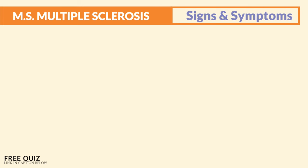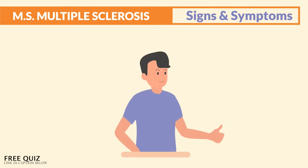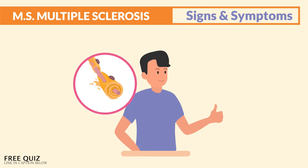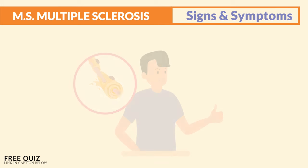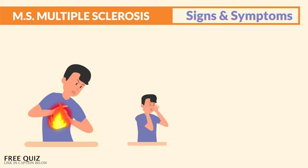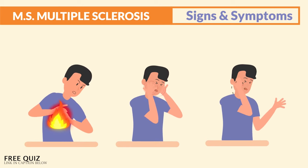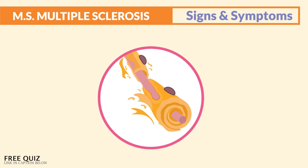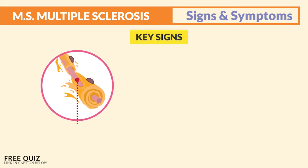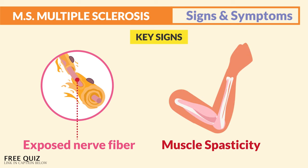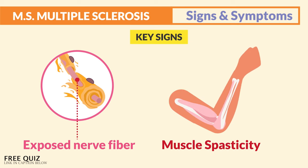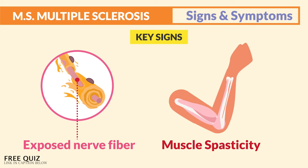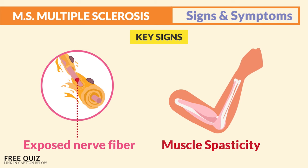In terms of signs and symptoms, clients with M.S. can look perfectly fine on the outside, but inside they can have burning sensations, numbness, and tingling. During bad flare-ups, we can see the key sign — write this down — muscle spasticity. M.S. is muscle spasms; that's the number one key sign.